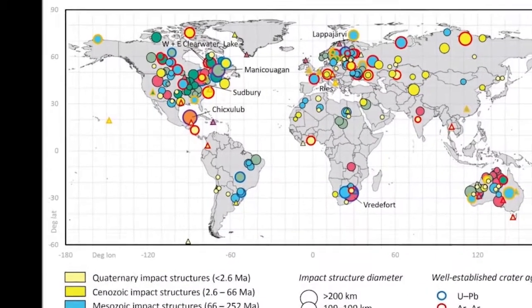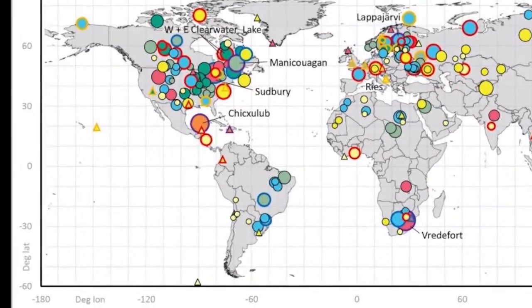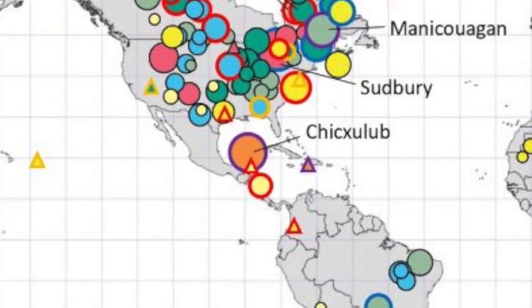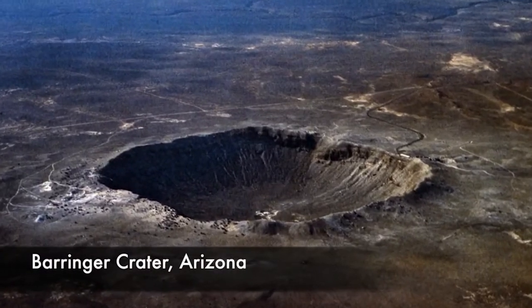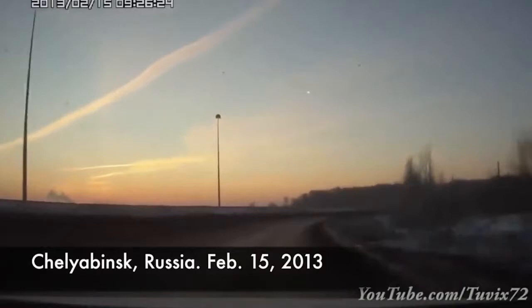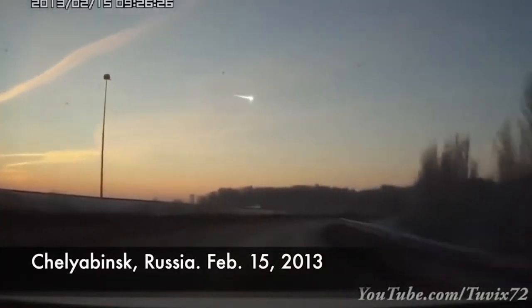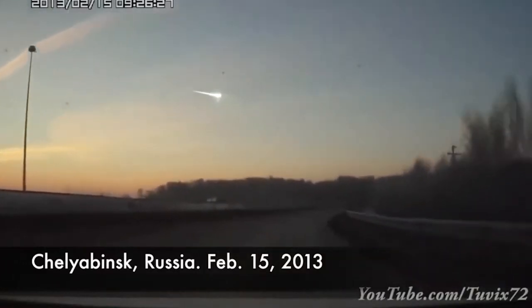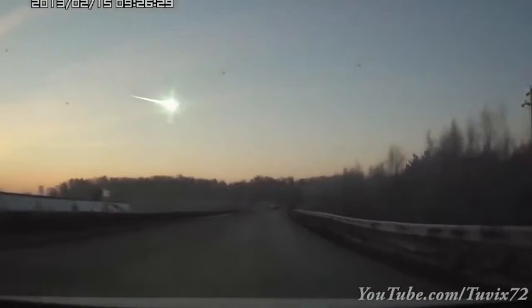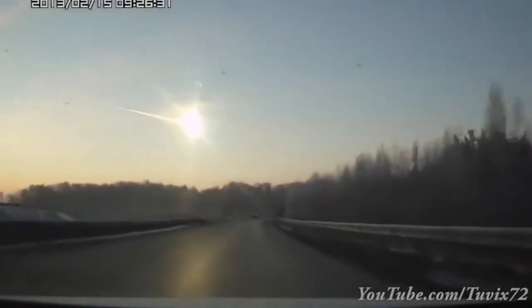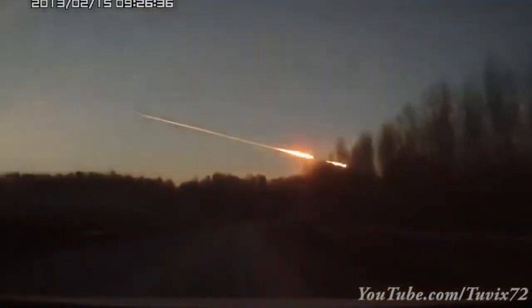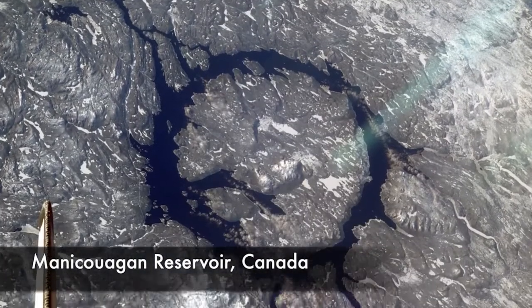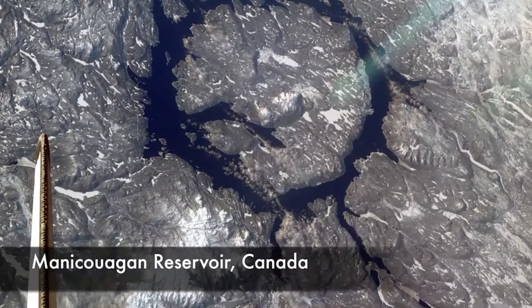Did you know that Earth has been hit by more asteroids than the Moon? After all, we're much bigger. We have a few craters, but why don't we have more? Our atmosphere protects us by breaking and melting most of the debris from space. Three-quarters of Earth is covered by water, so three-quarters of impacts are in the ocean and just make waves. When land is hit, weather eventually erodes the craters, destroying them.